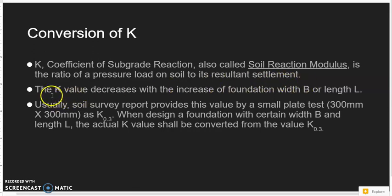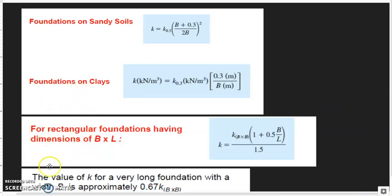The K value will decrease with the increase of foundation width B or length L for our design. Usually, soil survey report only provides the value K30. The actual K value should be converted from the tested result. The formulas for conversion to the sandy soils, then we should convert K30 to our actual K.